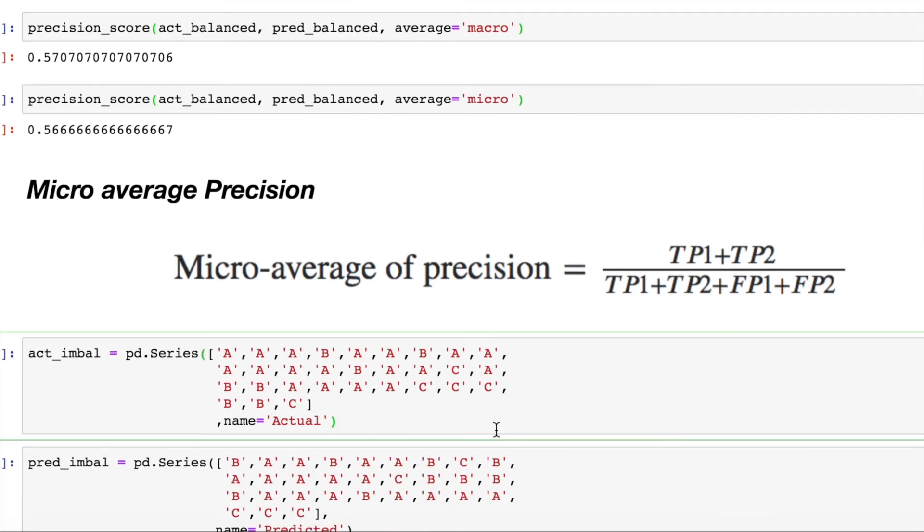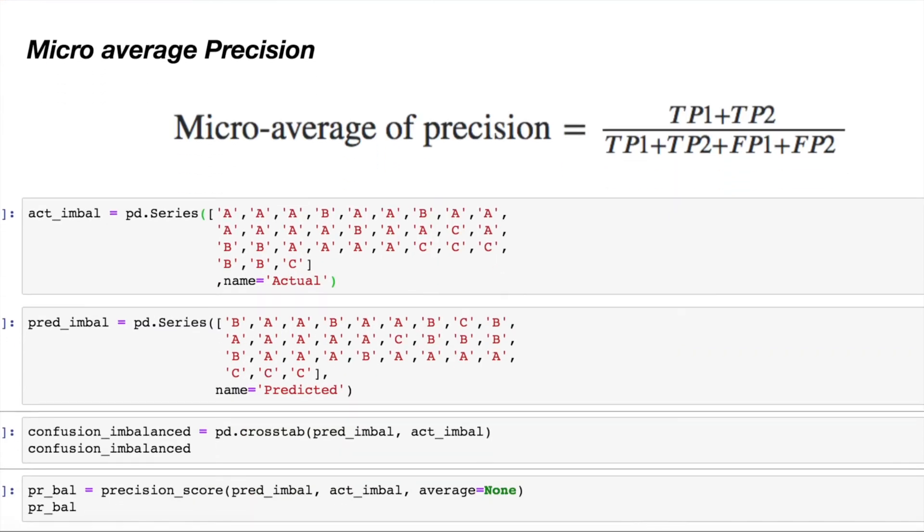Now, I have introduced an imbalanced class distribution for the three classes where A has 20 samples, B has 5 samples and C has 5 samples. In this case, I create a confusion matrix.